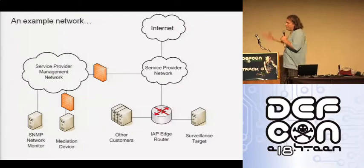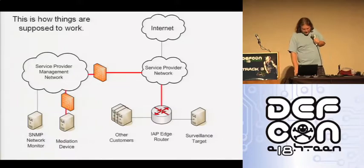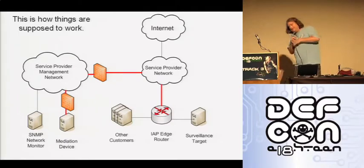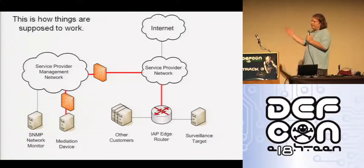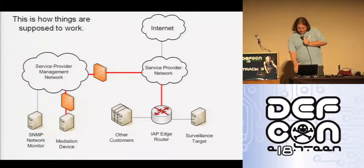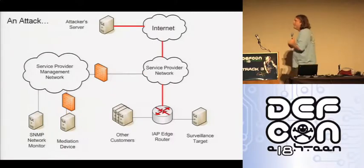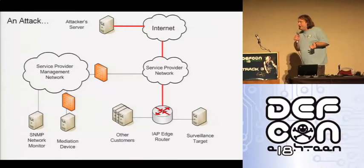In that service provider management network is the mediation device, hopefully behind another firewall. This is how this is supposed to work: if you look at the red line traffic flows, the mediation device sends an interception request out to the IAP edge router, and the edge router collects data from the surveillance target and sends it back to the mediation device. This is a sort of idealistic attack scenario — the attacker on the internet sends the interception request to the router and the router sends the intercepted traffic back out to the attacker's server on the internet.